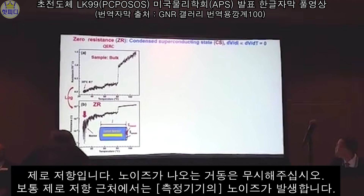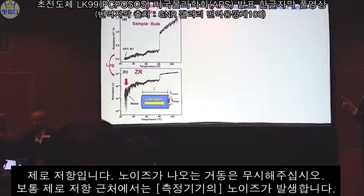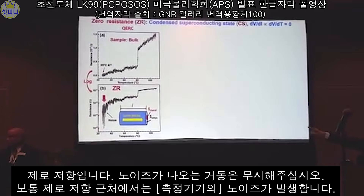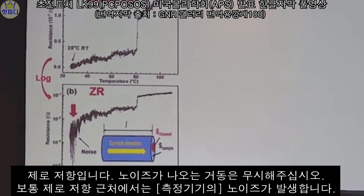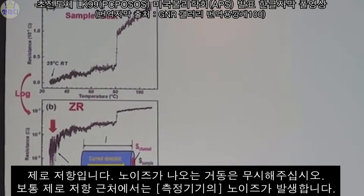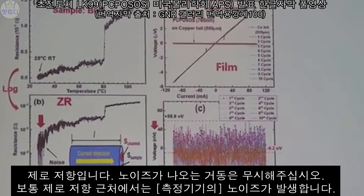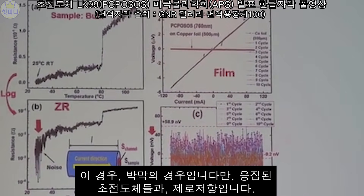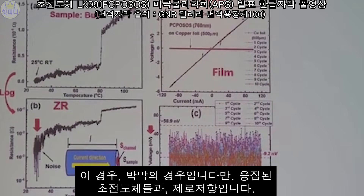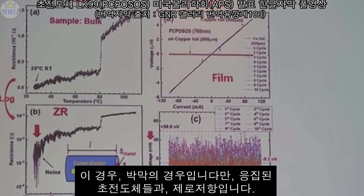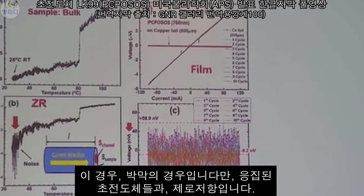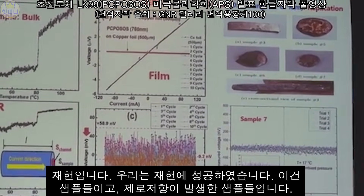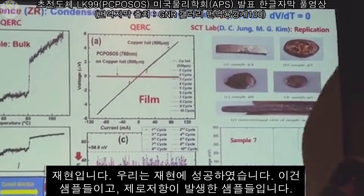General resistance — there is a vortex behavior, a jump, a lot of noise. Usually the general resistance becomes noisy. So in this case, the thin film case of condensed superconducting states — then generally like that. We have succeeded in duplication.